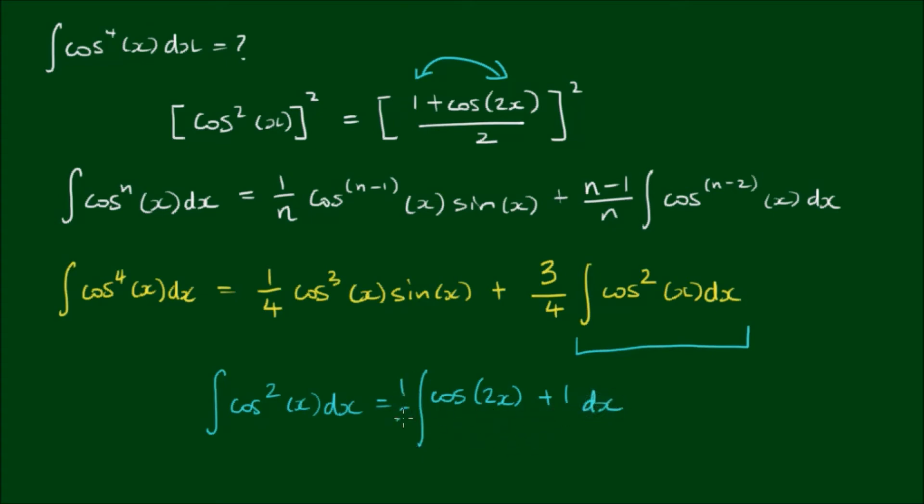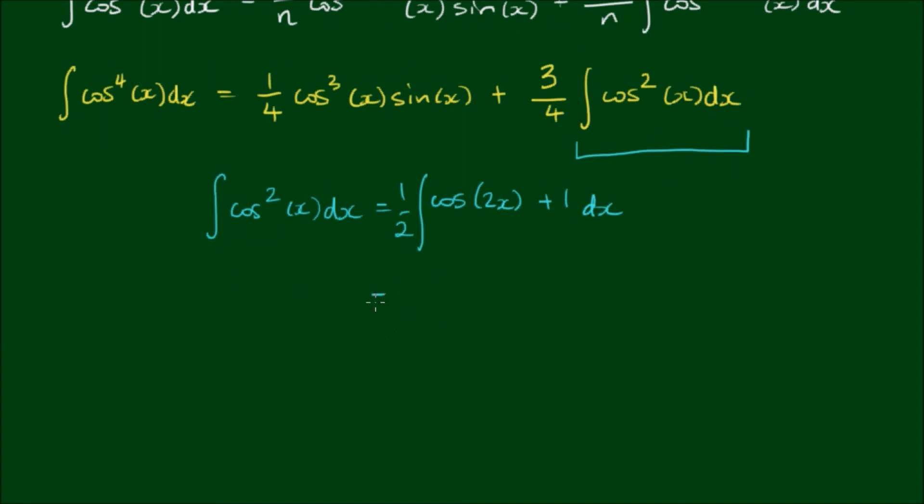The half can come out the front. So this evaluates to a half by the integral of cosine is sine. So it's sine of 2x, and I need to apply the reverse chain rule by dividing by the derivative of the inside of the parentheses here, which is equal to 2. The integral of 1 goes to x. And of course I need to include a plus c here. So expanding that, we get sine of 2x on 4 plus x on 2 plus c.